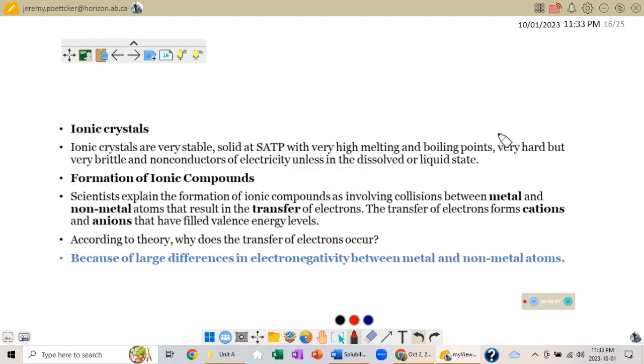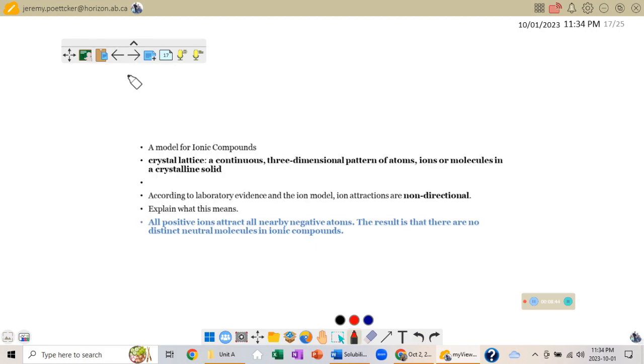How do ionic compounds form? Scientists explain the formation of ionic compounds as involving collisions between metal and non-metal atoms that result in the transfer of electrons. So we're not sharing, we are transferring. This is going to form cations and anions, and these cations and anions will have filled valence energy levels. According to the theory, why does this transfer take place? And this is electronegativity, because of large differences in electronegativity between metal and non-metal atoms.